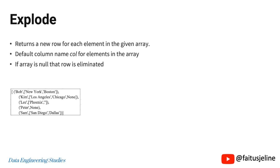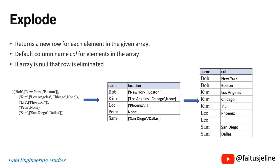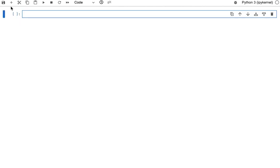Let's take an example of a dataset which has name and locations, and some of the names have more than one location. For example, Bob has the locations New York and Boston, whereas for Peter the location is none. When we create a dataframe for this dataset, we get name as a string and location as an array. When we pass location to the Explode function, we get a new row for each element. Since Peter has an array of none, that record will be eliminated.